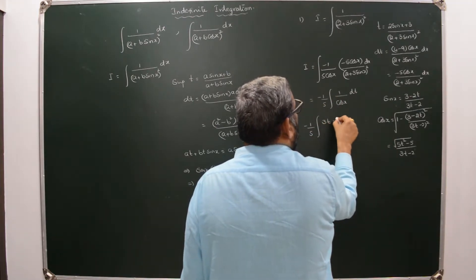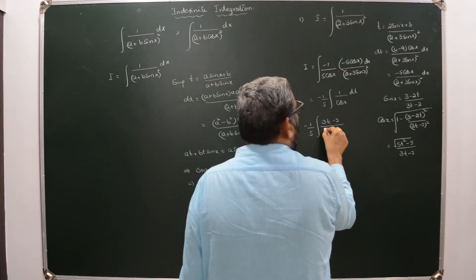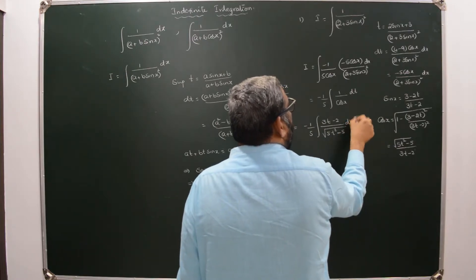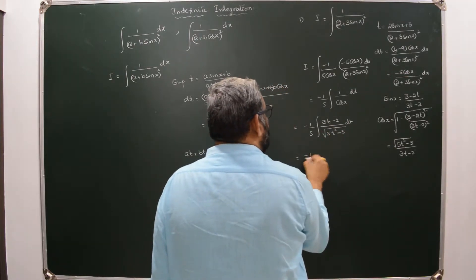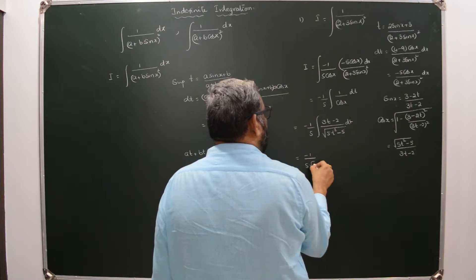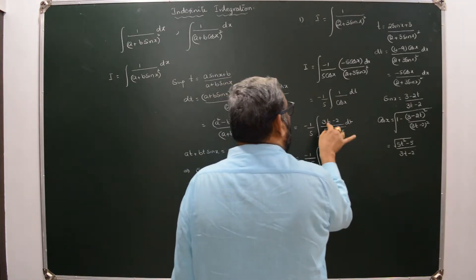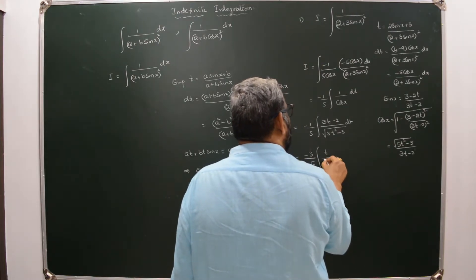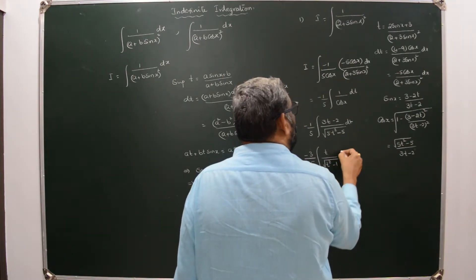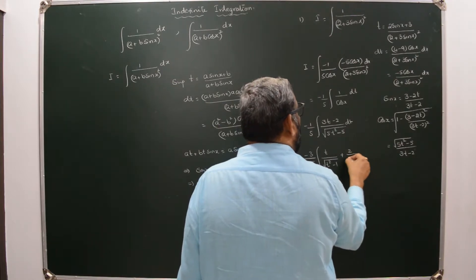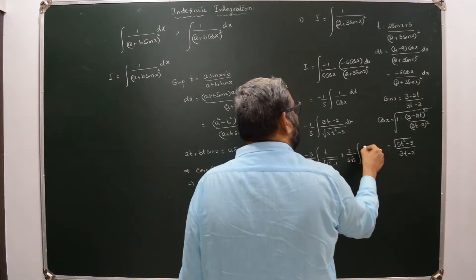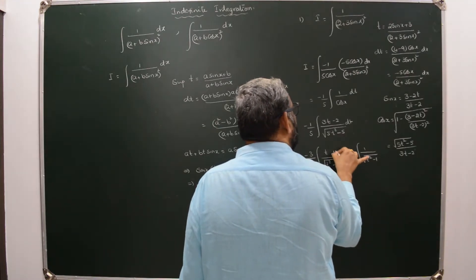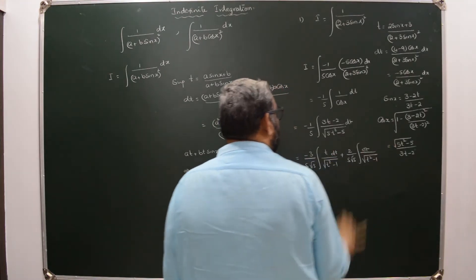Now we can write it as -1/5 · ∫(1/cosX) · dt. Since cosX is in the denominator, we write (3t - 2)/√(5·(t² - 1)), giving the integral as -1/(5√5) · ∫(3t - 2)/√(t² - 1) dt.